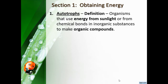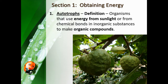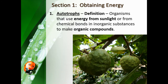By definition, an autotroph is an organism that uses sunlight to get energy, or gets energy from chemical bonds in inorganic substances to make organic compounds. For example, this plant has a fruit — we would eat that fruit to get energy, while the plant uses its leaves for photosynthesis to make that fruit. The goal of a fruit is to provide food for the seed so it can grow into a big plant itself.